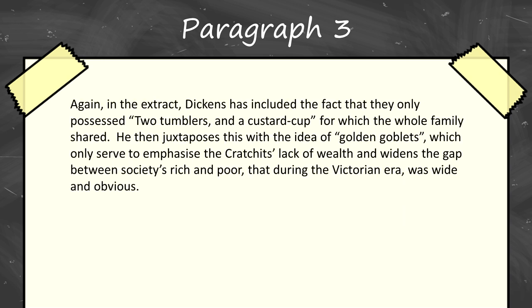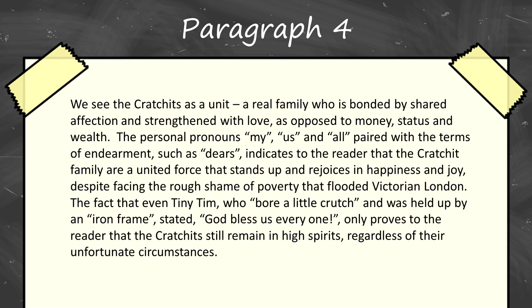Again in the extract, Dickens has included the fact that they only possessed two tumblers and a custard cup which the whole family shared. He then juxtaposes this with the idea of golden goblets, which only served to emphasise the Cratchits' lack of wealth and widens the gap between society's rich and poor that during the Victorian era was wide and obvious. We see the Cratchits as a unit — a real family bonded by shared affection and strengthened with love, as opposed to money, status and wealth.